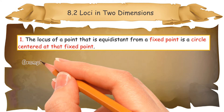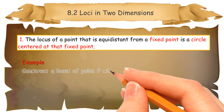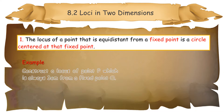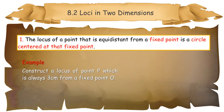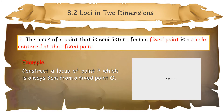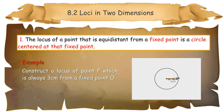Example: construct a locus of point P which is always 3 cm from a fixed point O. Mark point O. Set the gap of the compass at 3 cm. Construct a circle of radius 3 cm centered at point O.